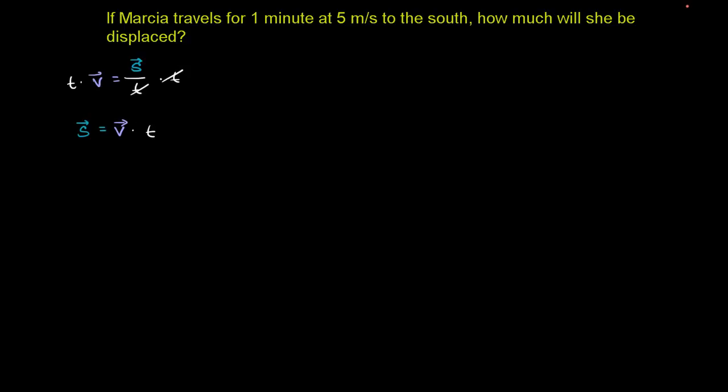So over here, they're asking us for displacement. They're asking us, how much did Marcia get displaced? And they're saying that she travels for one minute. So this one minute right over here, this is her time. Sometimes you could view that as her change in time, or it really is her change in time. If it said 0 minutes on her stopwatch when she started, at the end it'll say 1 minute.